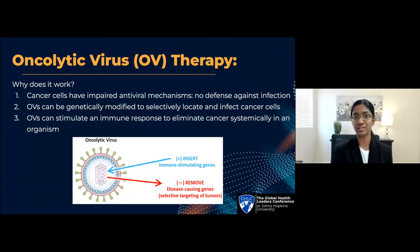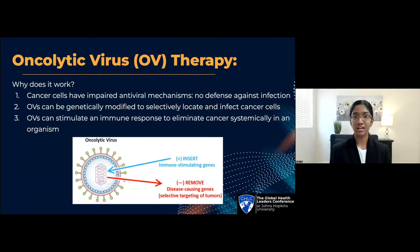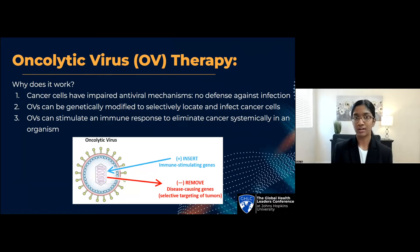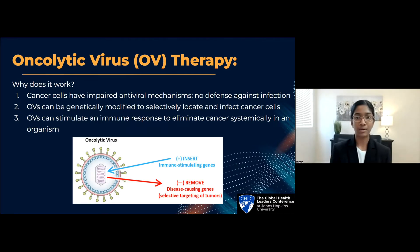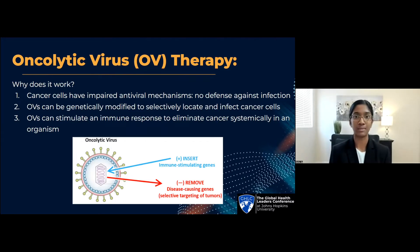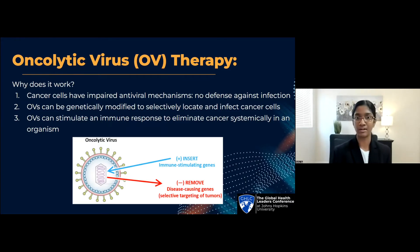There are three main reasons why oncolytic viruses are effective. Firstly, cancer cells often have impaired antiviral mechanisms that make them more susceptible to infection. When normal cells are infected by a virus, they turn on a genetically controlled cell death pathway that prevents the viral infection from spreading, effectively killing the virus. But when it comes to cancer cells, they have already turned off this pathway during development, and therefore they're more vulnerable to infection by a virus. This impairment is what we try to exploit in oncolytic virus therapy.